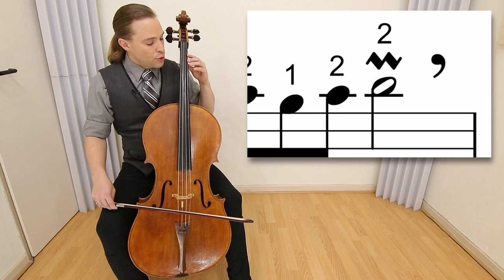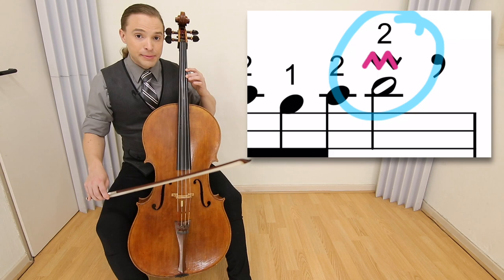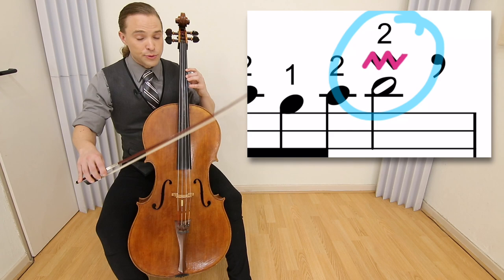We play here, you see the line right above the D natural with the two, which means to put your second finger on the D natural on the A string. And then that squiggle means to play the D and then play the note in the key signature right above just once.